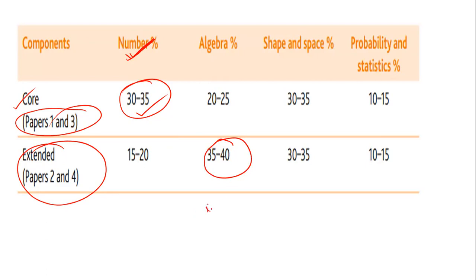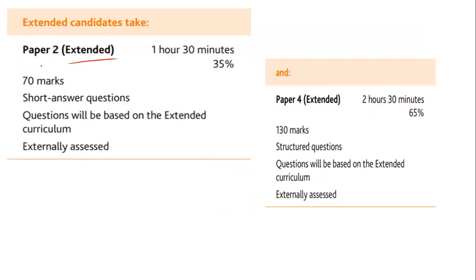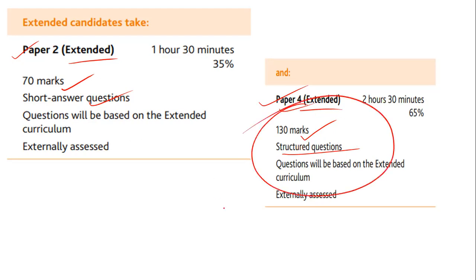There is also a difference in the level of questions — in core the questions are very easy, in extended they are tougher. For core, Paper 1 is 56 marks with one hour timing and short answer questions. Paper 3 is 104 marks with two hours and structured long-answer questions. For extended, Paper 2 is 70 marks with short answer questions, and Paper 4 has structured questions worth 130 marks — that is the most important paper.